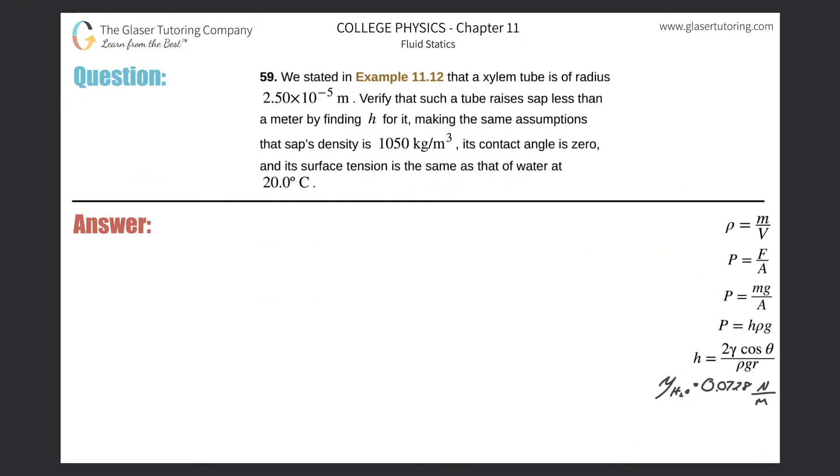Number 59. We stated in Example 11.12 that a xylem tube is of radius 2.5×10^-5 meters. Verify that such a tube raises sap less than a meter by finding h for it, making the same assumptions that sap's density is 1050 kg/m³, its contact angle is zero, and its surface tension is the same as that of water at 20°C.